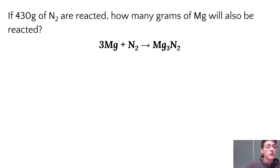So I've got an example question here, we're just going to do a worked example. I know I've got 430 grams of nitrogen that's given to me, if that's reacted, how many grams of magnesium will also be reacted? So we're going to go from nitrogen, if I have 430 grams, the question is how many grams of magnesium will you also need to do that reaction?